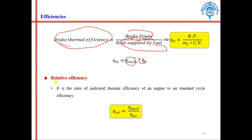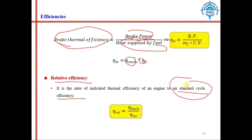Relative efficiency is the ratio of indicated thermal efficiency of an engine to air standard efficiency. Air standard efficiency is the efficiency of an engine calculated by taking air as the working medium or charge — we will cover this in the heat engine chapter. Relative efficiency equals indicated thermal efficiency divided by air standard efficiency.